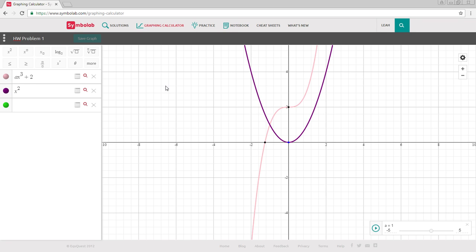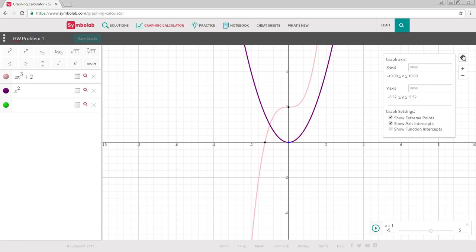This saves the graph to your notebook. In order to edit and change the graph settings, click on the Settings icon in the top right hand corner of the graph. The settings allow you to set scales, add labels to the axes, and select certain graph settings.